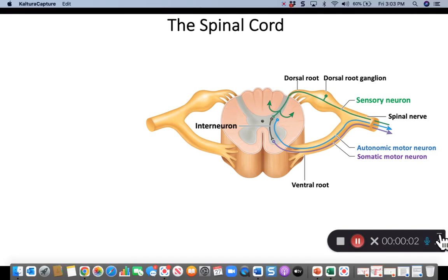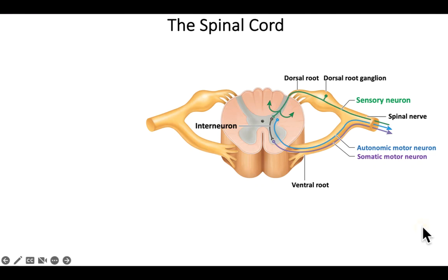How does the spinal cord work? It's part of your central nervous system, so it works very closely with your brain. The general function is to receive information — sensory signals from the periphery.